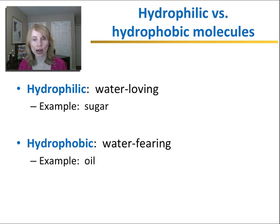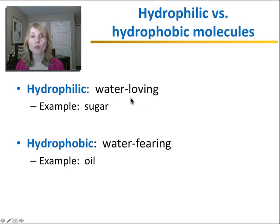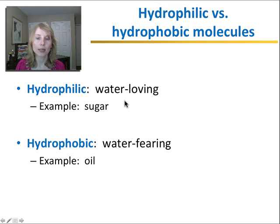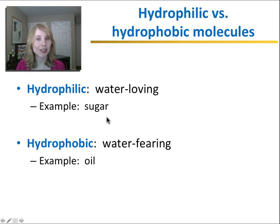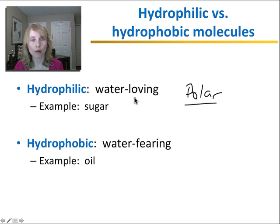If a molecule can interact with water, it is called hydrophilic — hydro for water, philic for loving. This is a water-loving molecule, meaning that it can interact with water and dissolve in water. An example is sugar — you already realize that it is possible to dissolve sugar in a cup of water. Any molecule that is polar is one that is hydrophilic, so all other polar molecules are able to dissolve in water.